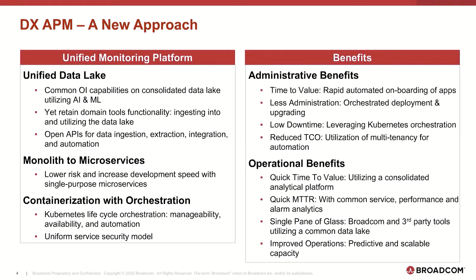Architecturally, DX APM changes to a microservices architecture, benefiting from Kubernetes lifecycle service orchestration and from a uniform security model. Benefits we are aiming for are rapid time to value by automated monitoring onboarding of applications, lower downtime by automated service management orchestration, and common OI analytic capabilities, easing, fastening, and improving monitoring because triage will be faster. The mean time to repair will become lower, capacity is predicted and easily scalable, and collaboration will improve with a single pane of glass on unified data for all stakeholders.